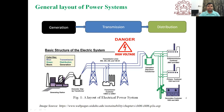This is the general layout of the power system — the simplest way of representing an electrical power system. The black symbol represents generation. First there will be generation of power, then transmission of power, then distribution of power. This is the basic structure of the electrical power system.